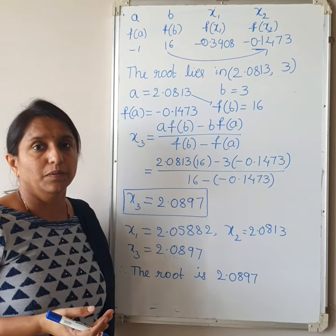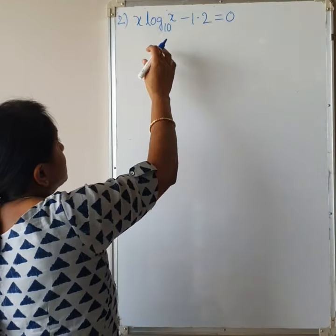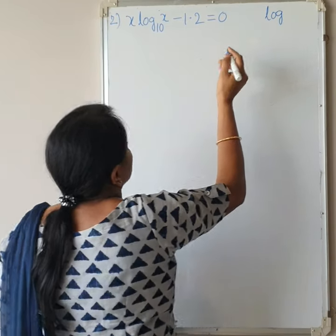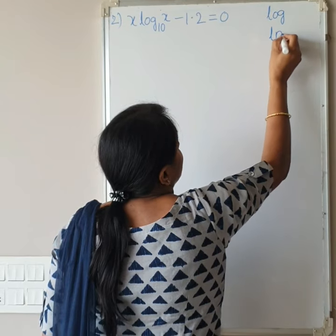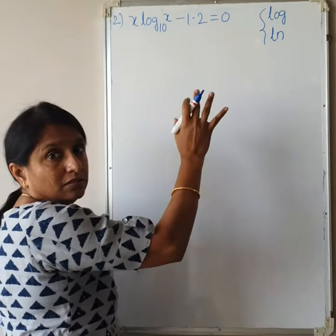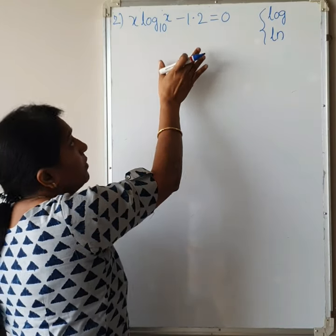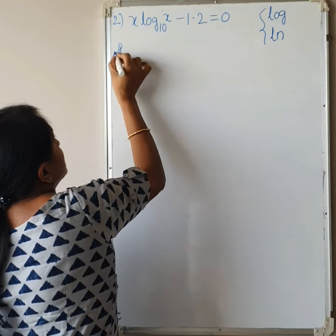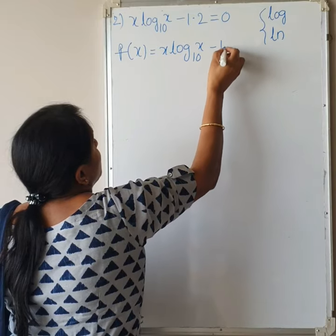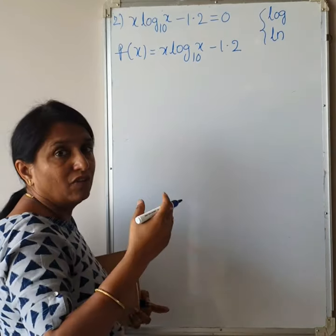Now let us consider the next example: X·log(X) [base 10] - 1.2 = 0. Whenever a logarithmic function is there, check the base. If base 10 is given, use log on the calculator. If base is not given or base is E, use ln. This distinction is very important — using the wrong one will give wrong answers.